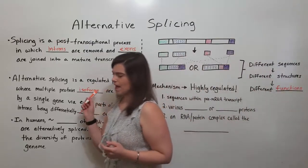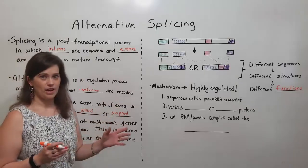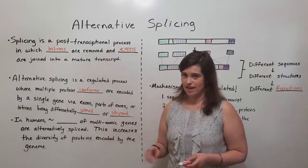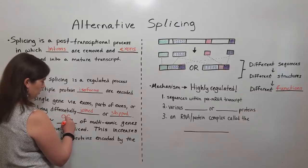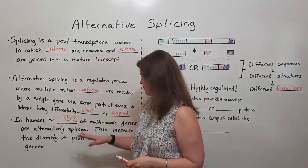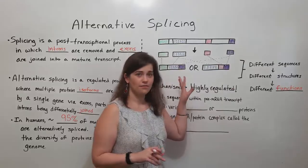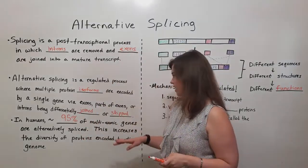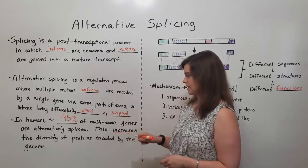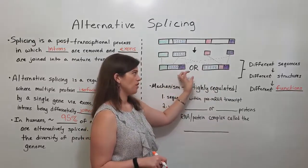These different structures can lead to different functions. You can have different protein isoforms all from the same gene that, because of alternative splicing, carry out different functions in the cell. In humans, as many as 95% of multi-exonic genes — that is, genes that have more than one exon in the transcript — are alternatively spliced. So this process is a very common one in most eukaryotes, including humans.